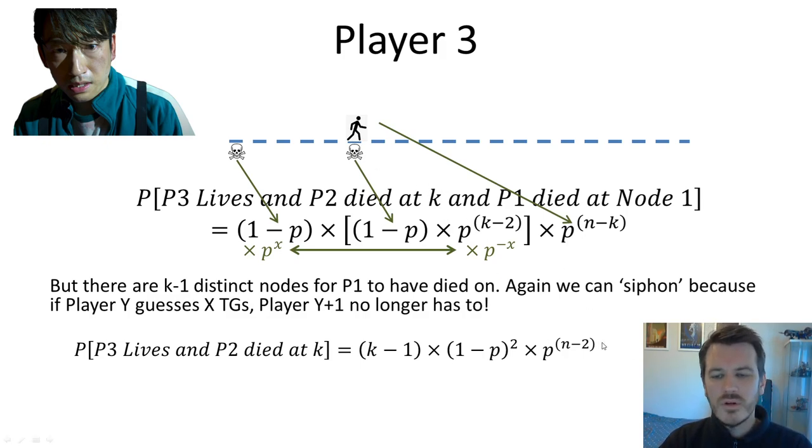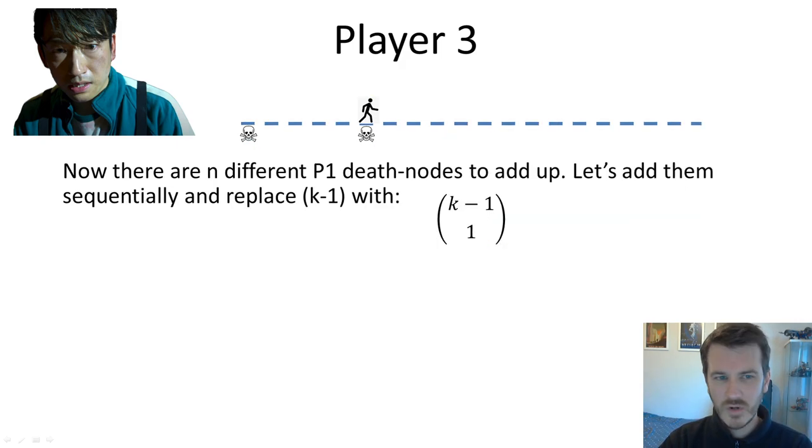So an important result from this is that as player 3's game begins later, there are more combinations in which his game begins later and he goes on to live. Again, not to be confused with the fact that in reality he's starting from node 3 or 4 or 5 almost all the time and he's almost always dying. Don't confuse that with the counting of scenarios in which player 3 lives.